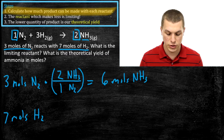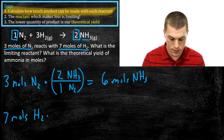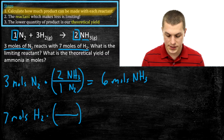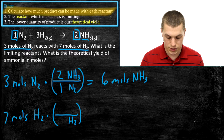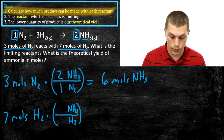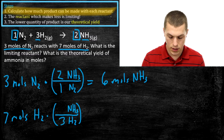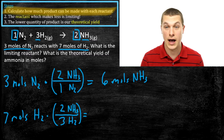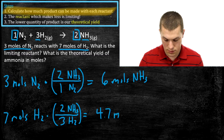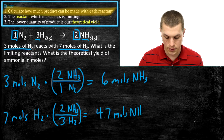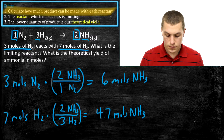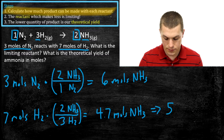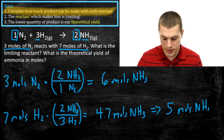We're not done yet, because that's just how much we can make with our N2 — we also want to know how much we can make with our hydrogen. In this case, we want to get rid of our hydrogen and get ammonia. We fill in with our chemical recipe: there's a three in front of H2 and a two in front of ammonia. So if I multiply seven moles times two and divide by three, I get 4.7 — which we round to five moles of NH3 for one significant figure, since we put in seven moles of hydrogen.